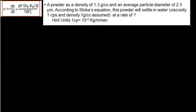Welcome back. We are going to do an example on sedimentation rate. A powder has a density of 1.3 grams per centimeter cubed and an average particle diameter of 2.5 micrometers. According to Stokes' equation, this powder will settle in water. The viscosity of the water is 1 centipoise and the density is 1 gram per centimeter cubed. We have to find the settling rate V. Let's write step by step.